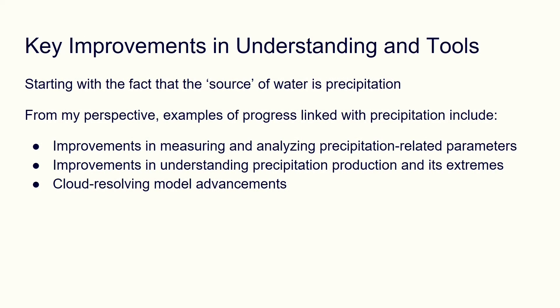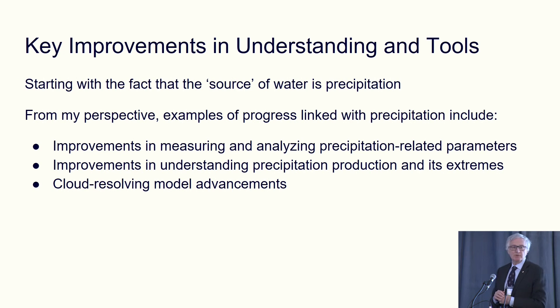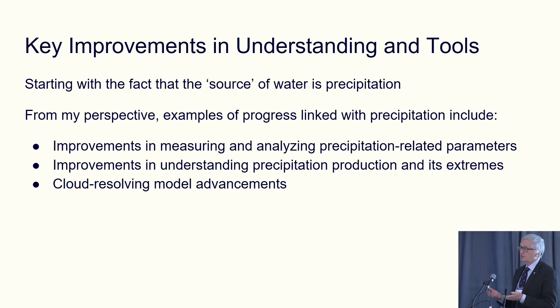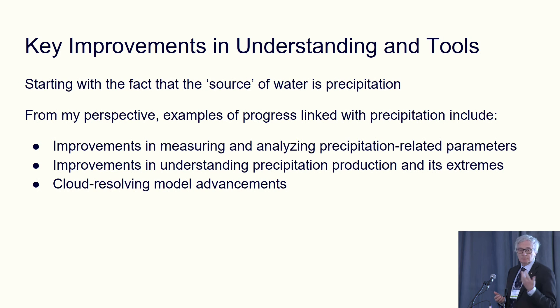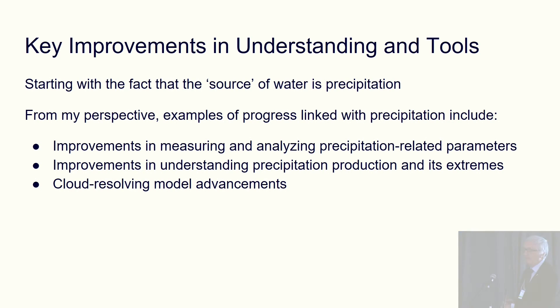If you're looking at precipitation it's not hard to fill up a whole page about precipitation anomalies. As an atmospheric scientist we're really interested in the factors that lead to each one of these particular key functions. In terms of key improvements in understanding over the last few decades, I think I can break them down into about three different categories. One is we've made enormous improvements in measuring and analyzing precipitation-related parameters. We're not just interested in how much precipitation occurred — we're interested in the size distribution, and the vertical profiles of how it actually got there. And we've made enormous increases in our understanding of precipitation production and the factors that conspire to produce extremes, culminating in cloud model advances.